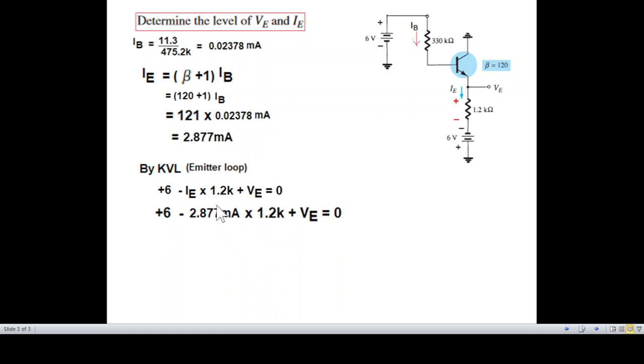Plugging in the value of IE and solving, VE is negative 2.547 volt.